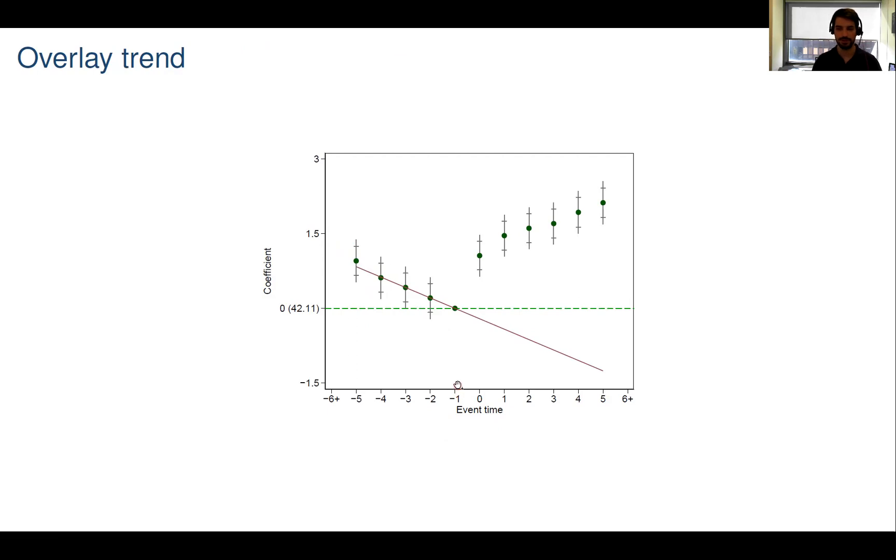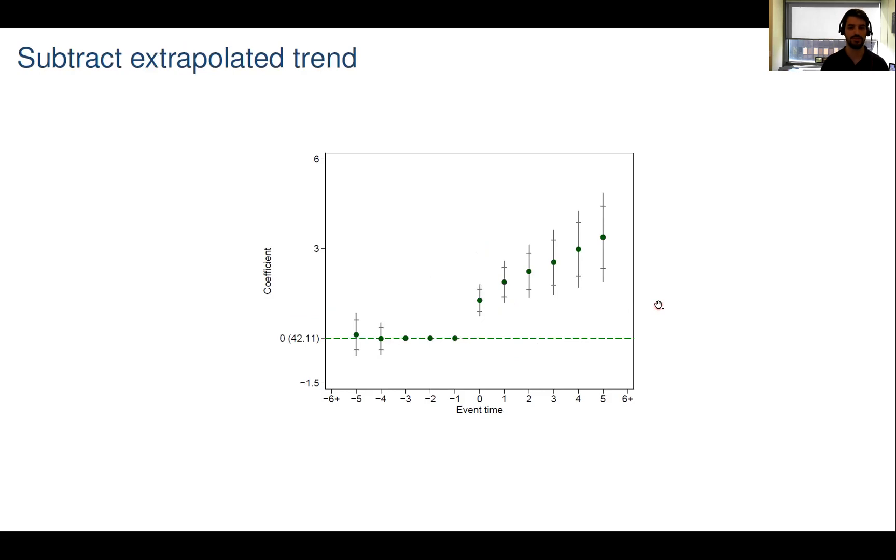Now the difference between the point estimates post events, these points up here, so the difference over here, gives us the causal estimate. The red line now gives us the counterfactual. This is where the outcome was headed if the confound had continued its linear trend that we estimated from pre-event data. Subtracting this line from the points up here gives us our causal estimate. And that picture would then look like this.